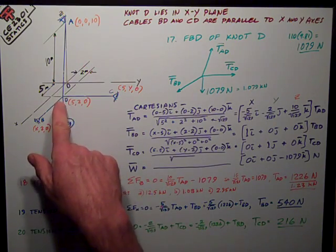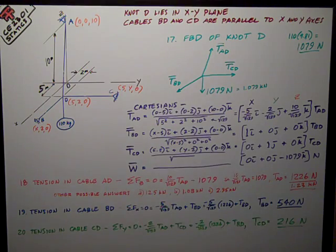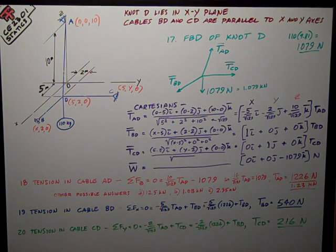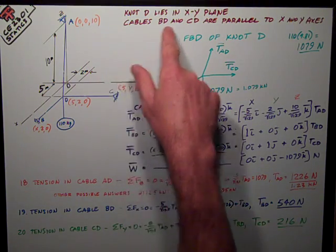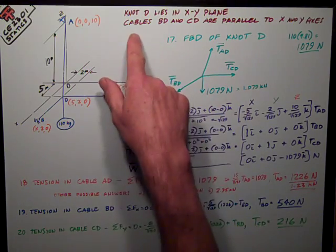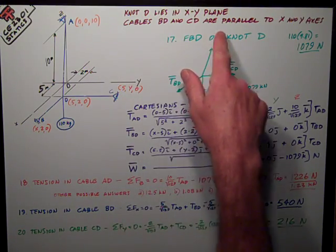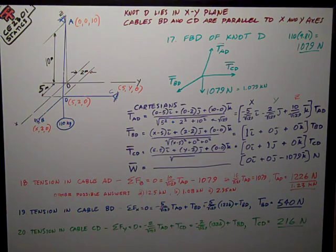Right here in the center where everything's attached lies in the x-y plane, and as it turns out so do cables BD and CD, because we're given that cables BD and CD are parallel to the x and y axes.